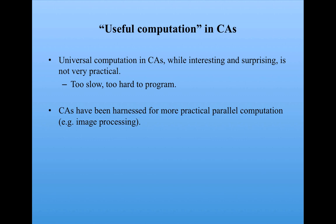However, CAs have been harnessed for more practical parallel computation, for example, in the field of image processing. I'm not going to talk much about that here, but in the next subunit, I'm going to talk about one particular project in which genetic algorithms were used to evolve cellular automata to perform practical computations.